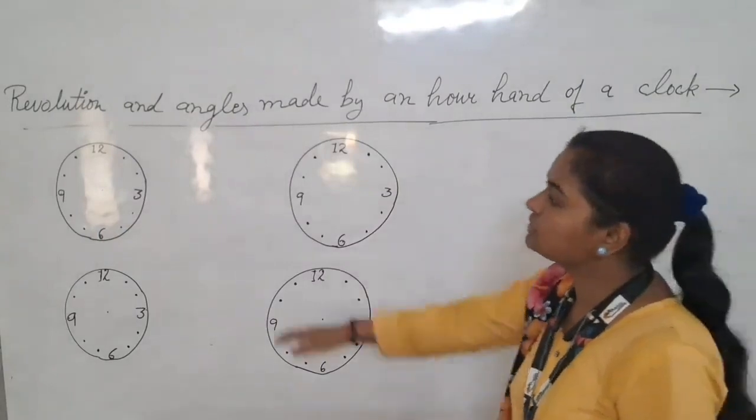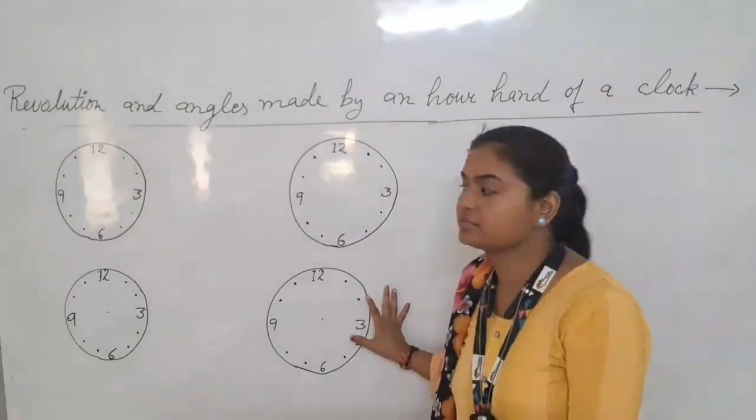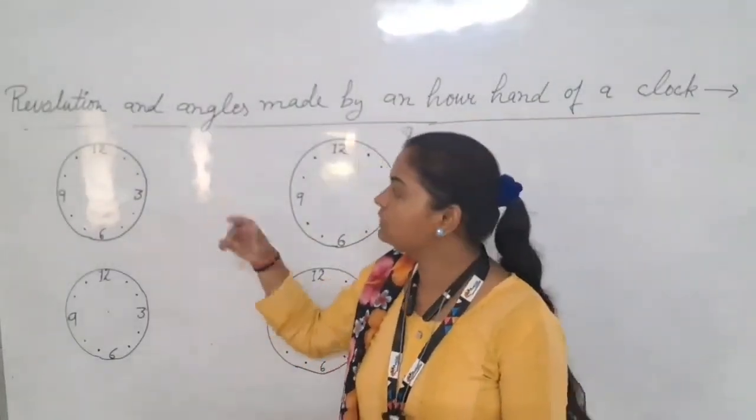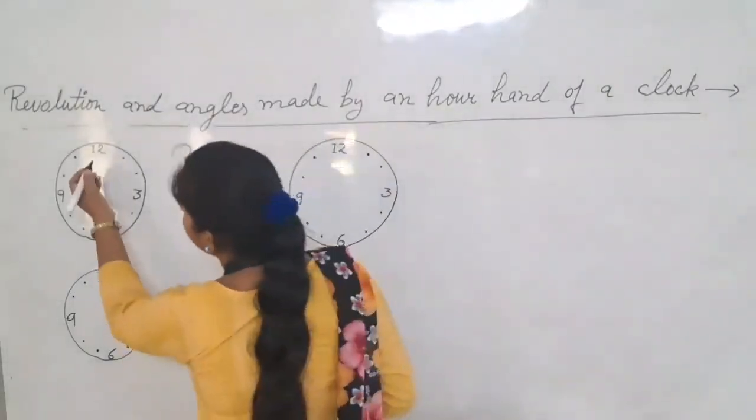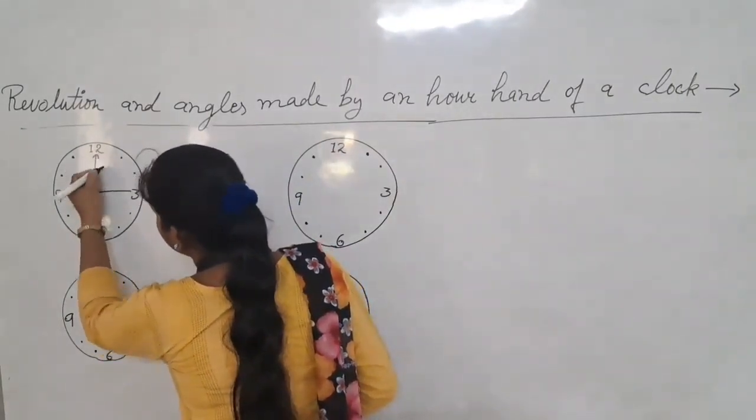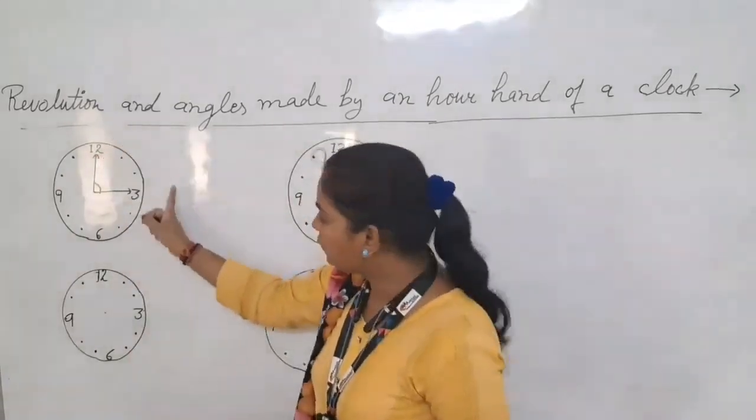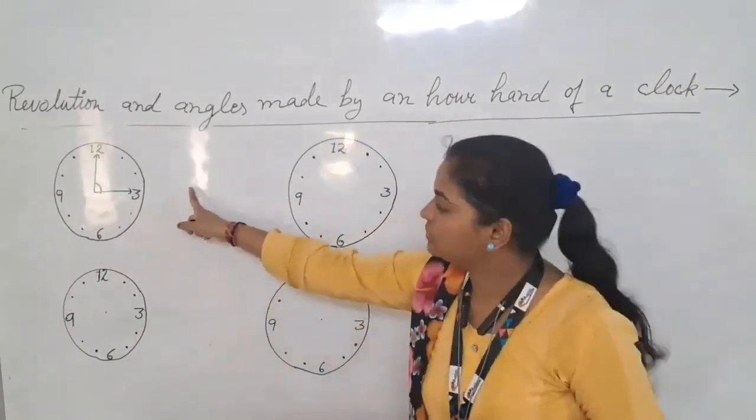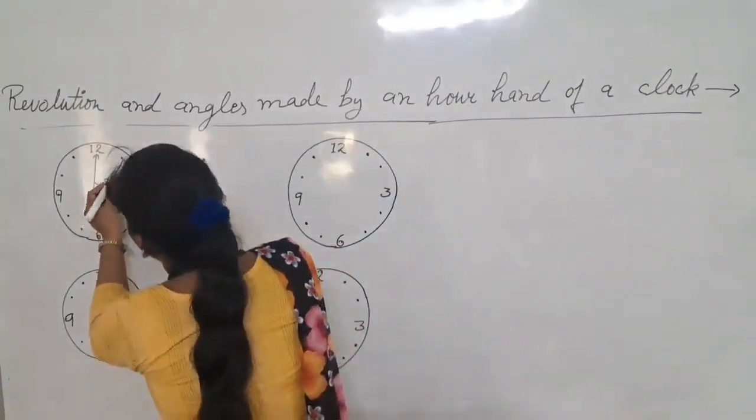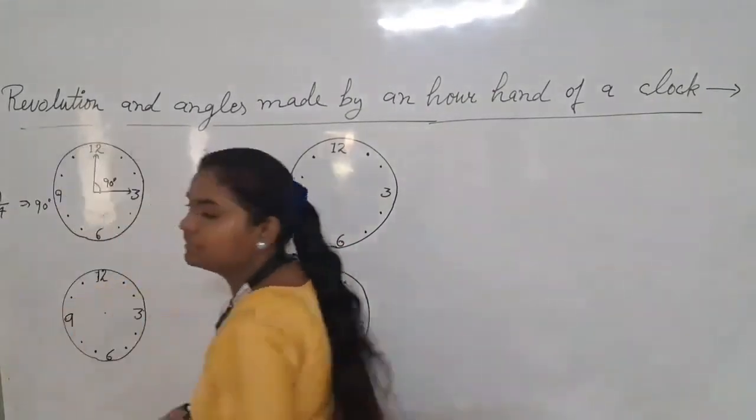Revolution and angles made by an hour hand of a clock. We have four flows. First, we will show one fourth revolution. One fourth revolution moves from north side to east side. One fourth revolution moves the angle 90 degrees.